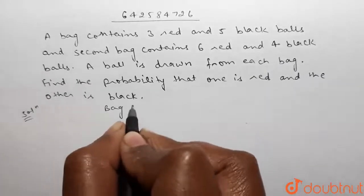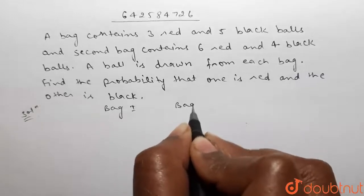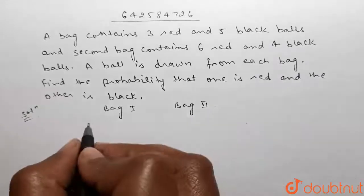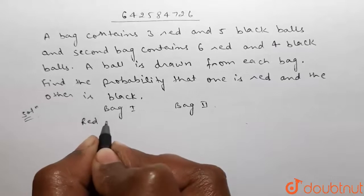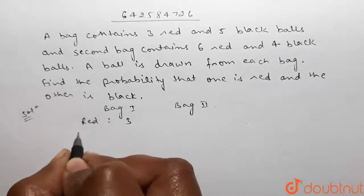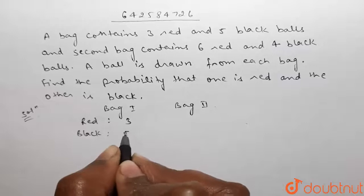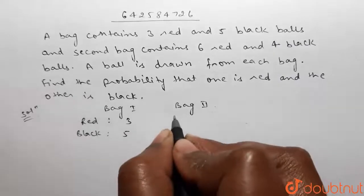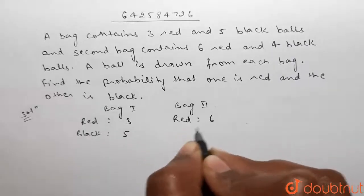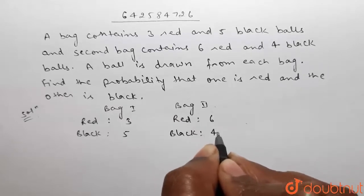There are two bags: Bag 1 and Bag 2. In Bag 1, the number of red balls is three and the number of black balls is five. In Bag 2, the number of red balls is six and the number of black balls is four.